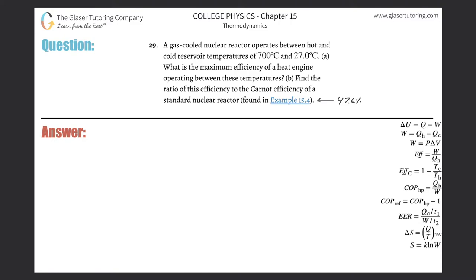Number 29, a gas-cooled nuclear reactor operates between hot and cold reservoir temperatures of 700 degrees Celsius and 27 degrees Celsius. Letter A, what is the maximum efficiency of a heat engine operating between these temperatures?